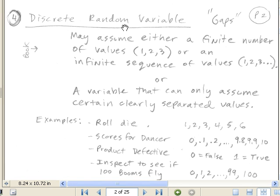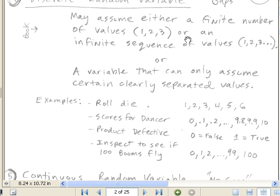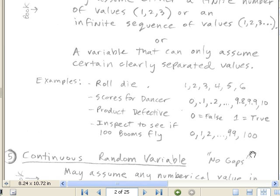Let's go to the next page, discrete random variable. Here are some examples. Roll a die - we can get 1, 2, 3, 4, 5, or 6. Scores for a dancer - we could get 0, 0.1, 0.2 all the way up to 9.8, 9.9, 10. A product defective - false meaning it's not defective is 0, or true would be 1. Inspect to see if 100 boomerangs could fly. If we're inspecting all 100 boomerangs, 0 of them could be flying, 1 could, 2, 99, or all 100. I used to run a boomerang manufacturing company, and out of 100 boomerangs being tested, I was hoping that 100 of them came out yes, this does fly. Sometimes one didn't come out and then we threw it out.